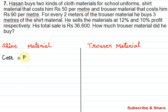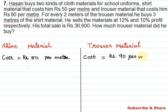Shirt material costs 50 per meter, so 1 meter of shirt material costs 50 rupees. Trouser material costs 90 per meter, so 1 meter of trouser material costs 90 rupees. Next, for every 2 meters of trouser material, he buys 3 meters of shirt material.